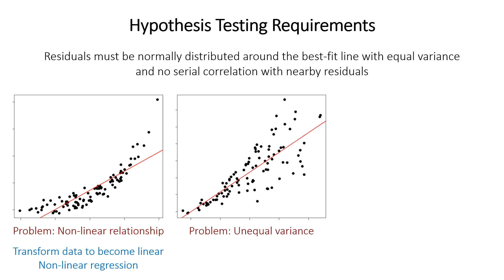Here's an example of unequal variance: the residuals are much closer to the line at small x values and much more spread out at large x values. This may not affect the slope much, but it does affect how we calculate the p-value and therefore the hypothesis testing. If you have this problem, you can use a method called weighted least squares regression.